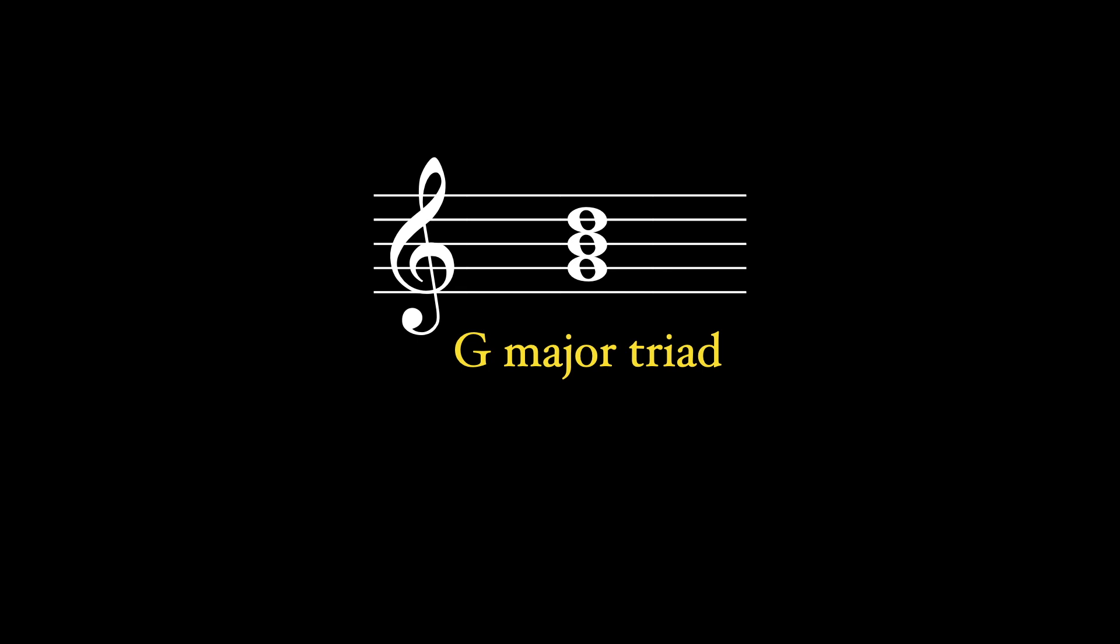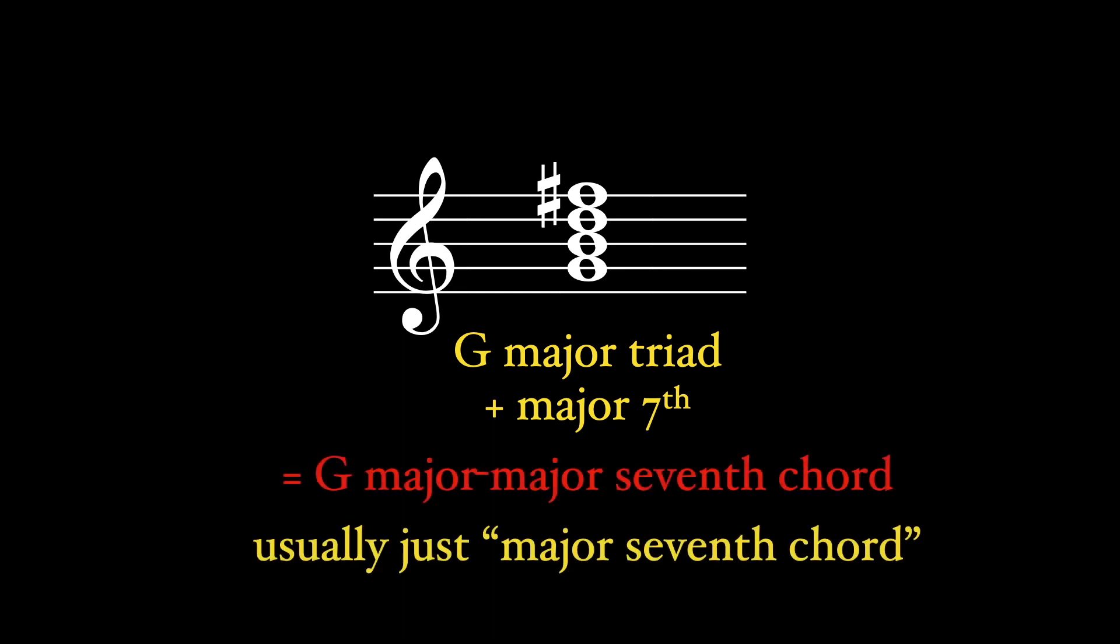For example, if we start with a G major triad and add a major seventh above the root G, that's an F sharp, this creates a G major major seventh chord, which we usually just call a G major seventh chord.